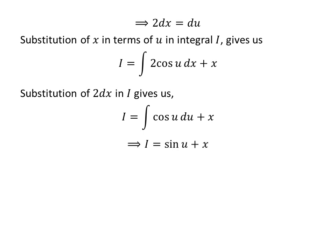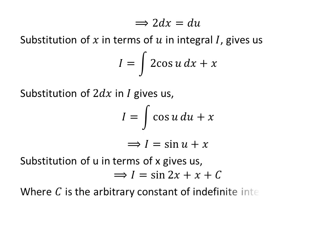Since sin(u) is the antiderivative of cos(u), we get I = sin(u) + x. Replacing u with its assumed value, the integral of sin(3x) upon sin(x) equals sin(2x) + x + C, where C is the arbitrary constant of indefinite integration. Do not forget to add this constant at the end of any indefinite integration.